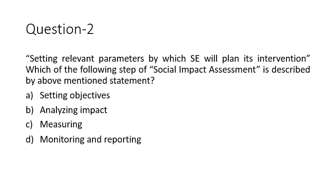Question two: setting relevant parameters by which a social enterprise will plan its intervention — which step of social impact assessment does this describe? The four options are: setting objectives, analyzing impact, measuring, and monitoring and reporting. It very obviously appears that measuring is the step used when you are setting relevant parameters. The answer is measuring.